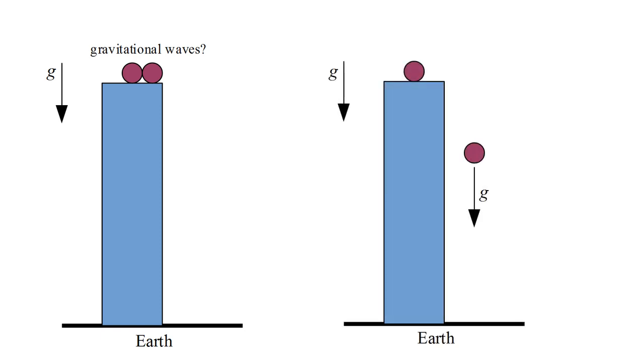Now suppose one of the balls falls off the roof. It will accelerate toward the ground. Are gravitational waves produced in this case? There is an accelerating mass in this scenario, so we might be tempted to answer yes. The falling ball radiates gravitational waves. But consider a reference frame that falls with the ball. In that frame, the ball is not accelerating. It's floating weightlessly. In fact, the ball on the roof is accelerating upward.